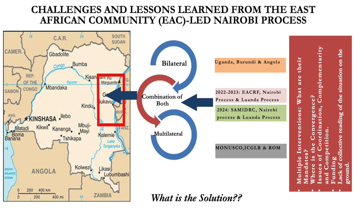When the East African Regional Force withdrew in December, the SADC military in DRC was deployed as an offensive force. Now we have SADC in place, the East African Community in place, and the Luanda process. Are all these mechanisms reading from the same script? No. The Southern African military deployment as an offensive force has led to a delay in the progress we had made negotiating with these armed groups.